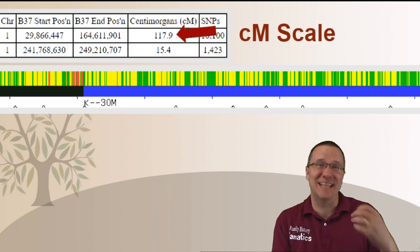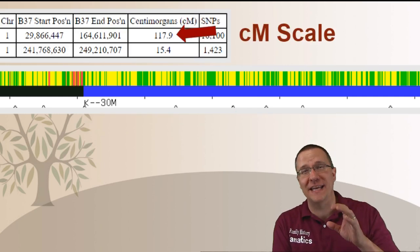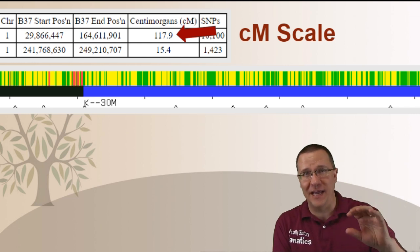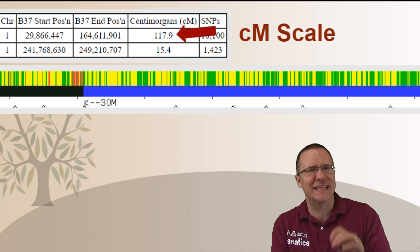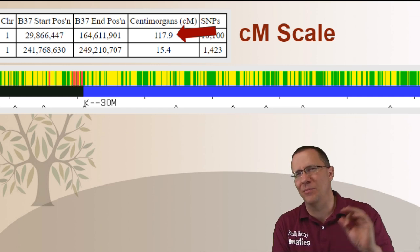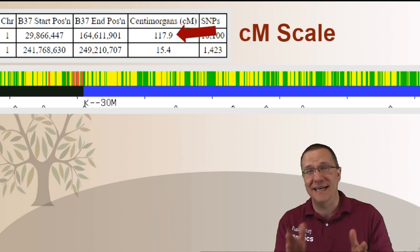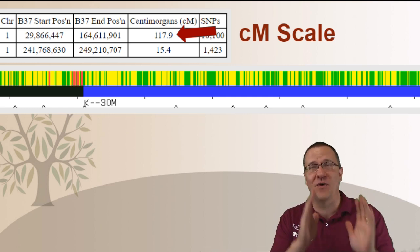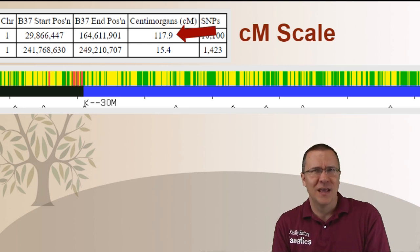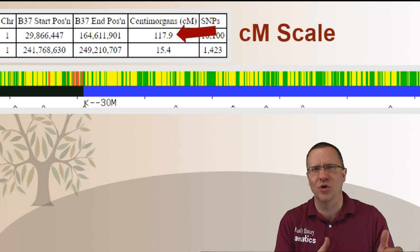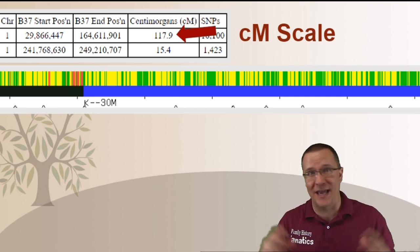Now finally we have the centimorgan scale. Now it would be great if we had a third line on there that have these centimorgans for it. However remember I said that centimorgans is based on probability and because it varies as far as how much length all throughout the human genome there's really no good way to show how much centimorgans alongside the SNPs and the megabases when we're doing that graphic.